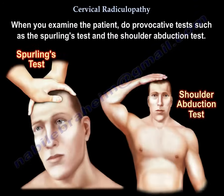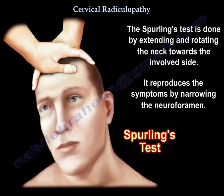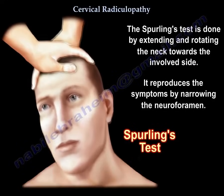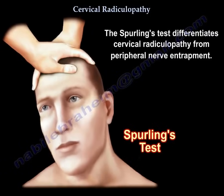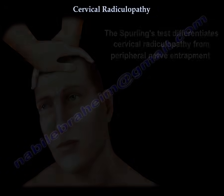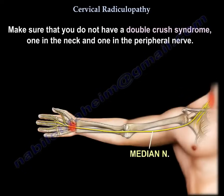On examination, perform provocative tests such as the Spurling test and the shoulder abduction test. The Spurling test is done by extending and rotating the neck toward the involved side — it reproduces symptoms by narrowing the neuroforamen and differentiates cervical radiculopathy from peripheral nerve entrapment. The shoulder abduction test involves lifting the arm above the head to relieve symptoms, differentiating cervical pathology from other causes of shoulder pain. Also be aware of double crush syndrome — one compression in the neck and one in the peripheral nerve.